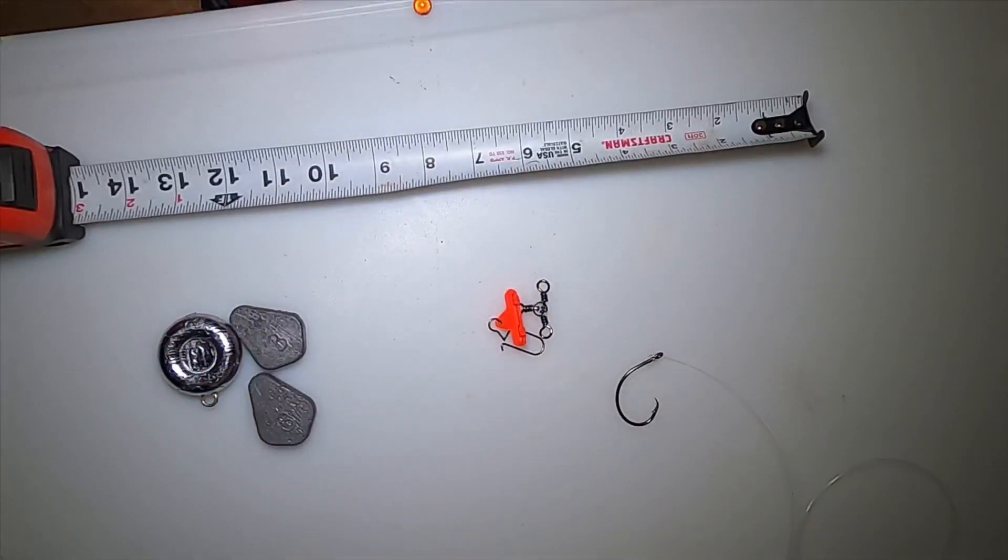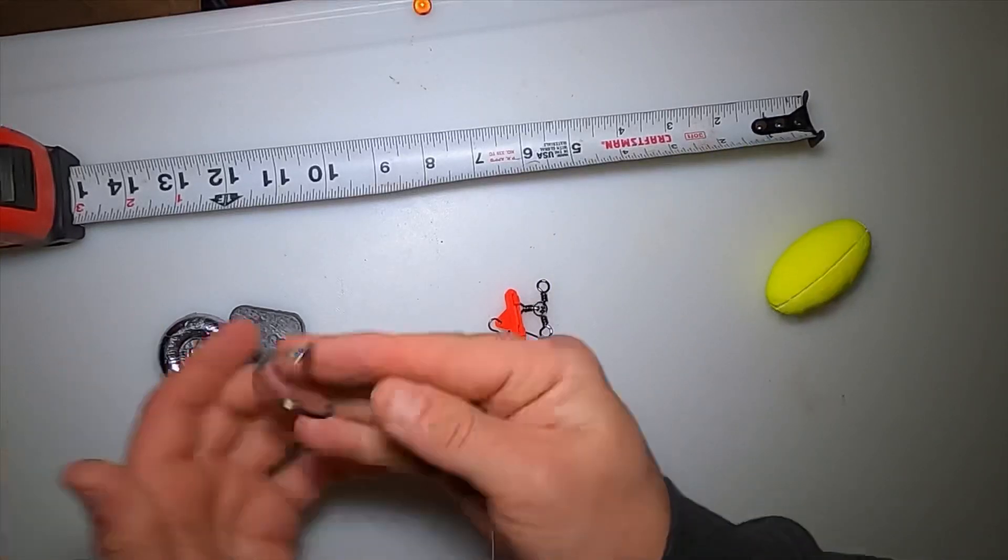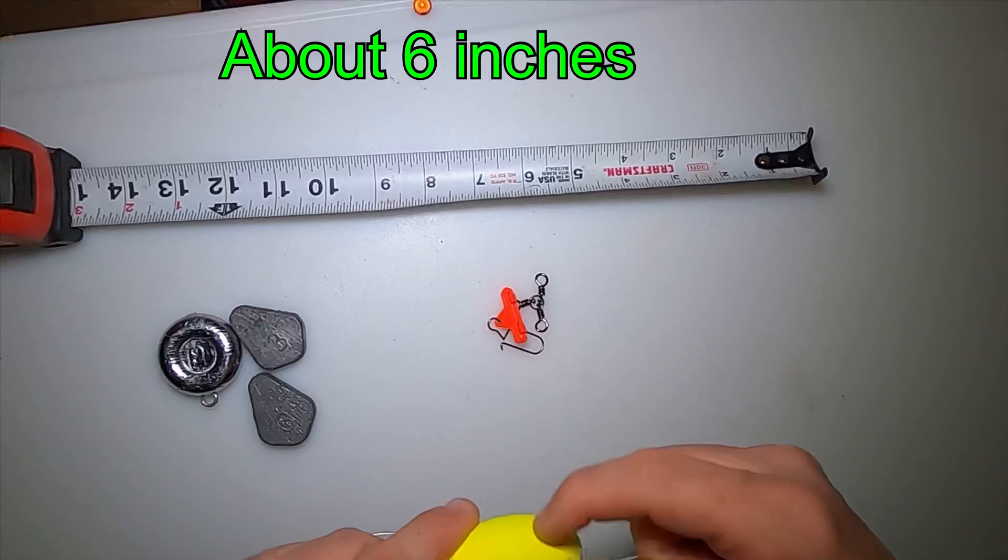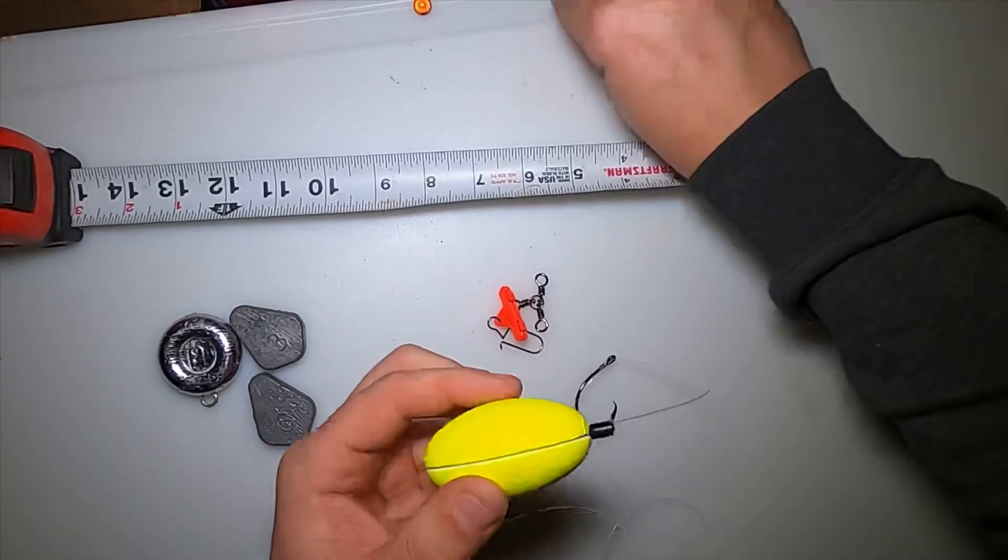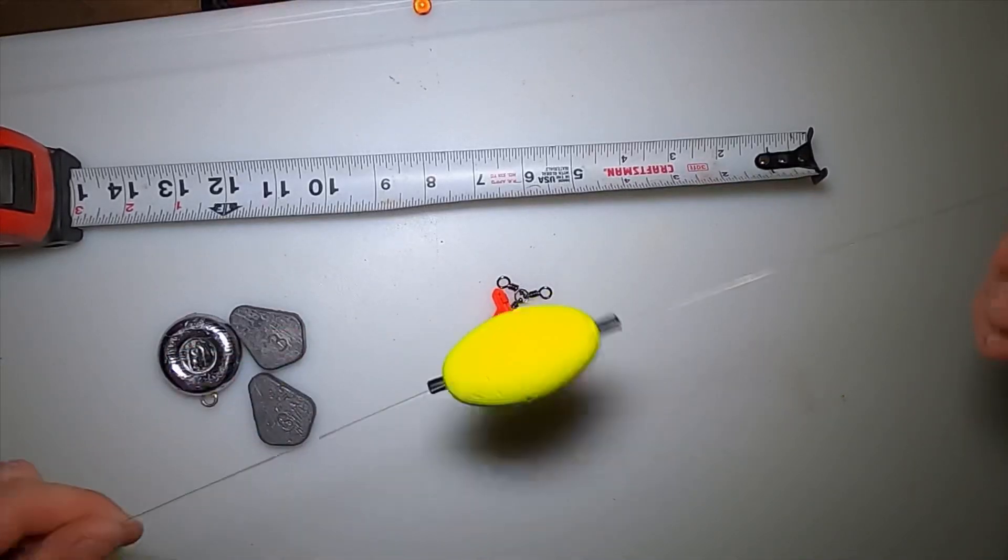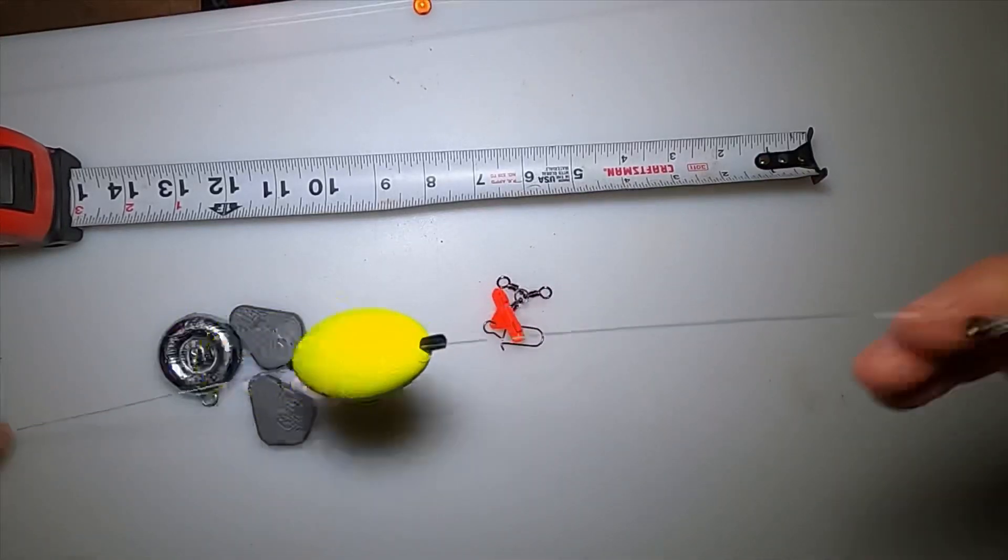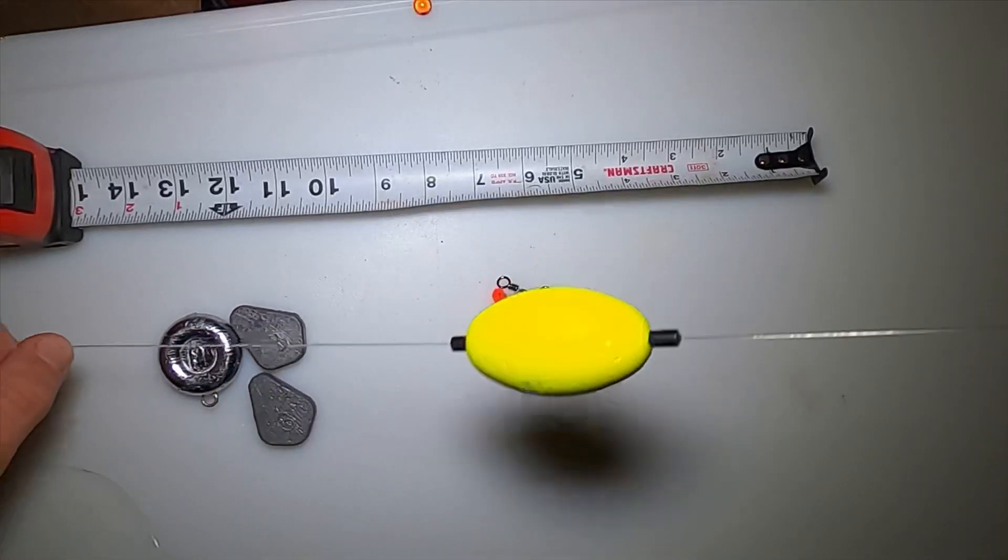Then I usually use one of these peg floats and a three-inch of these. The real key is to make sure it floats your bait off the bottom. I usually do it about hand length away from the hook. I'll take it and stick it on there like that. That right there will keep the bait up off the bottom so you don't get snagged and all that good stuff.